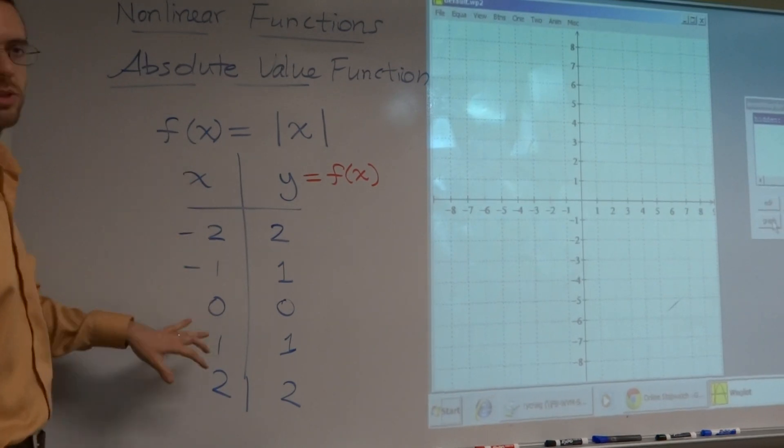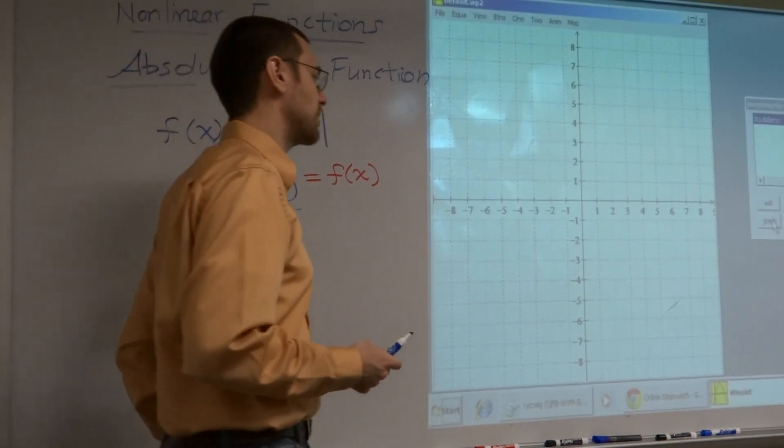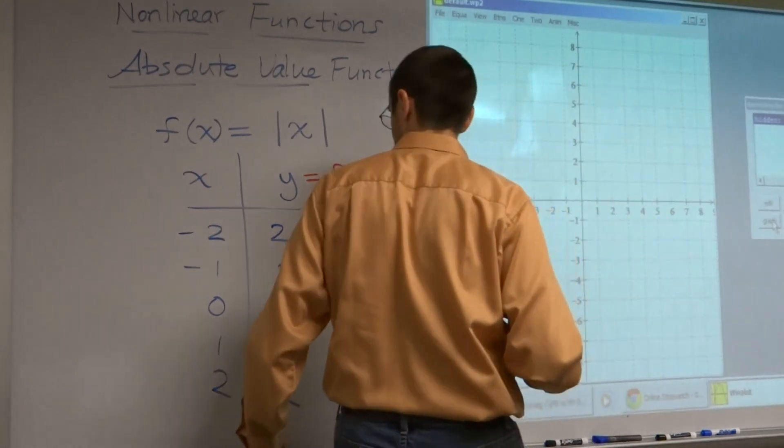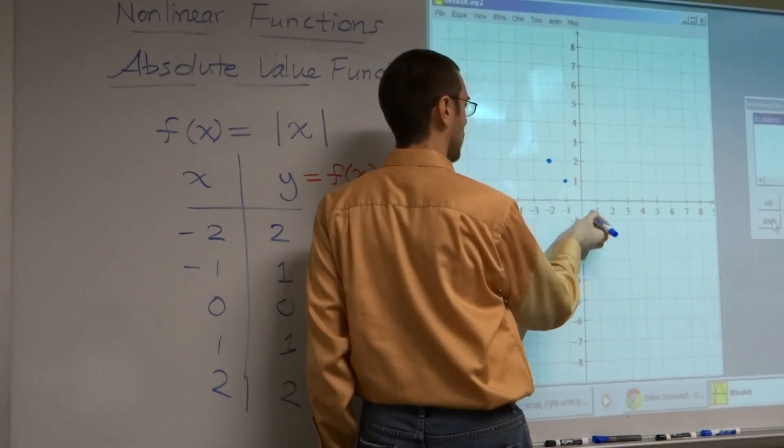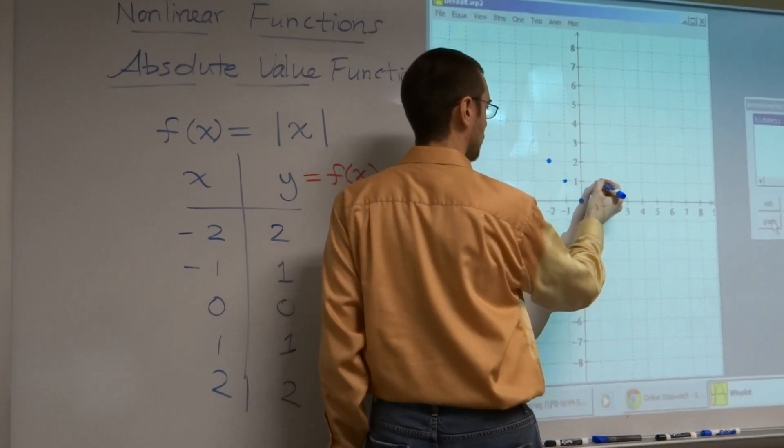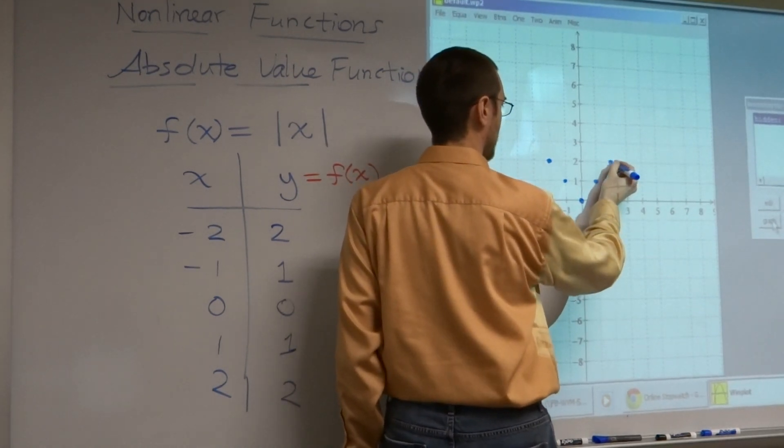So these are some points, but let's see if we can see some kind of pattern. See what this guy's going to look like whenever I graph it. I have negative two, two, negative one, one, zero, zero, one, one, and two, two.